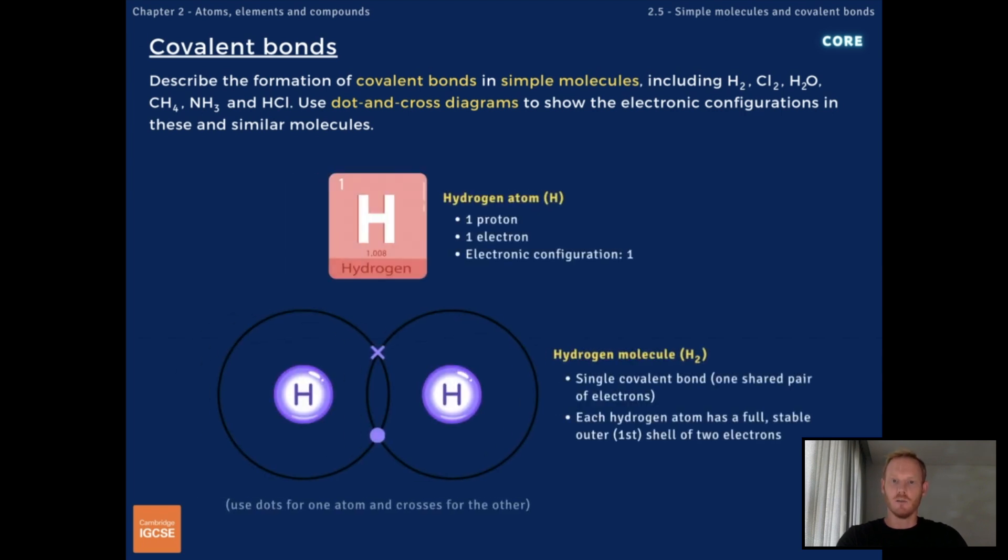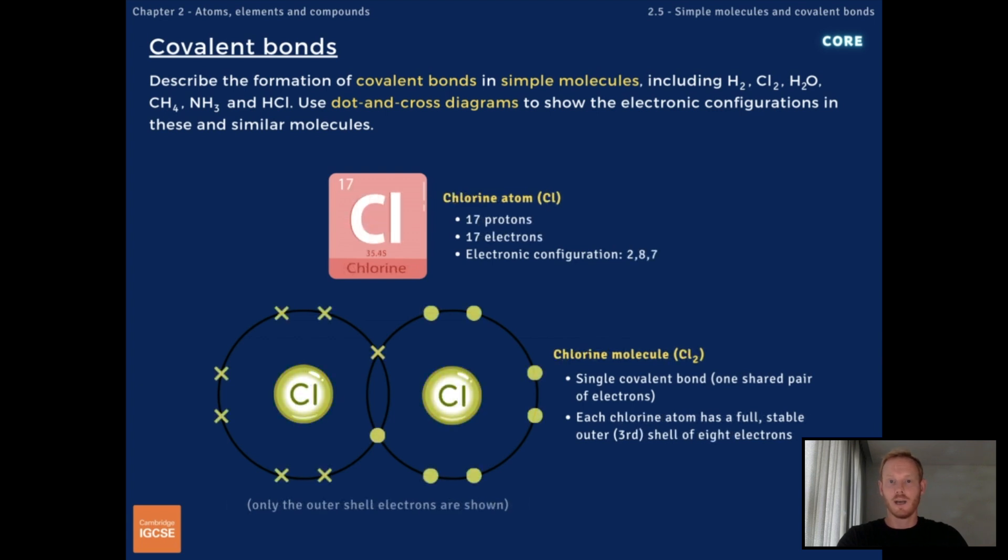The first is hydrogen, which consists of two hydrogen atoms joined together by a single covalent bond. This gives each atom a full stable outer shell of two electrons. Chlorine has seven electrons in its outer shell, and therefore needs one more to achieve a noble gas electronic configuration. It shares one pair of electrons with another chlorine atom to form a stable chlorine molecule with the formula Cl2. Note that when drawing dot and cross diagrams, you only need to show the outer shell electrons.